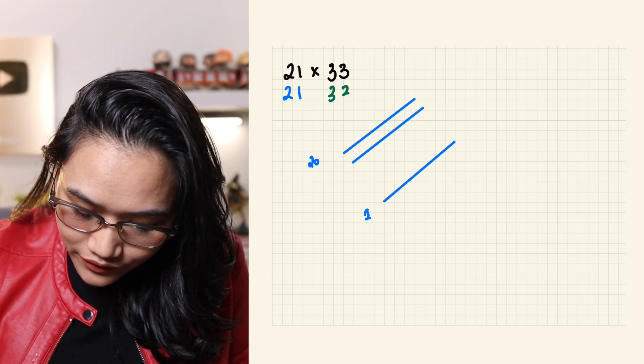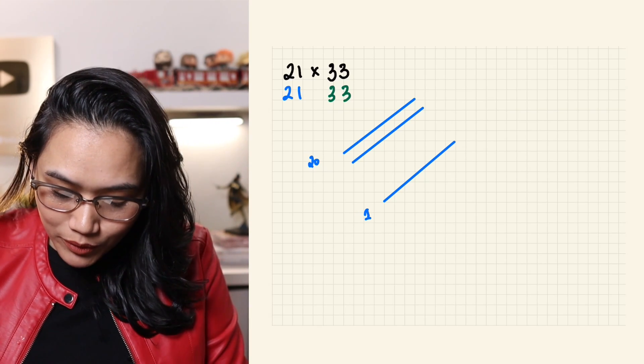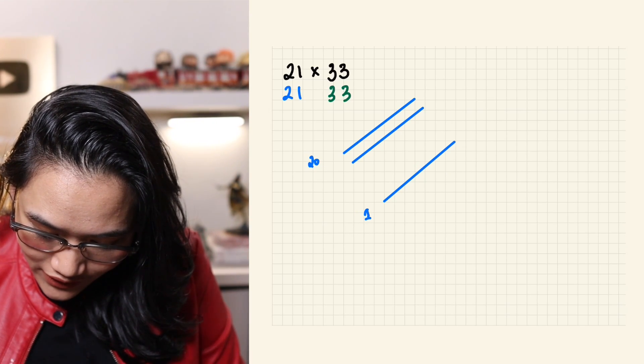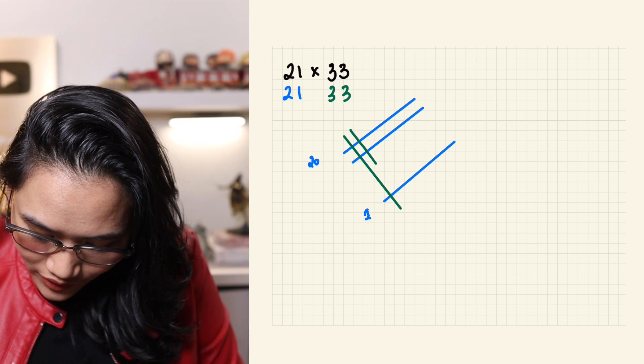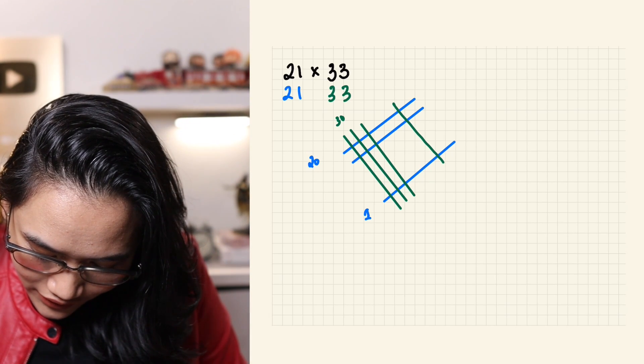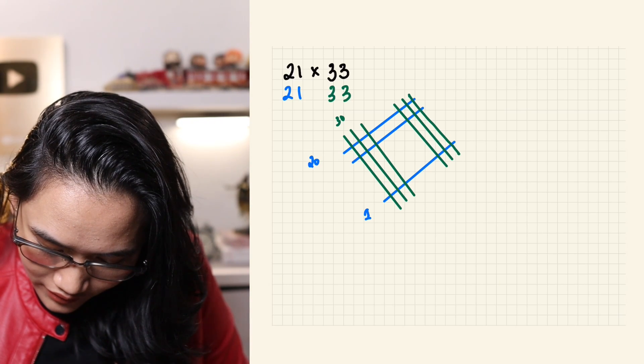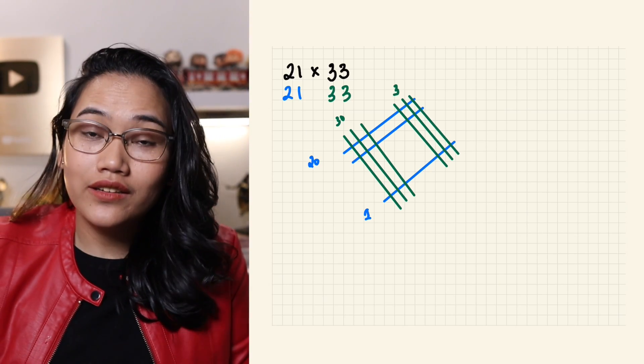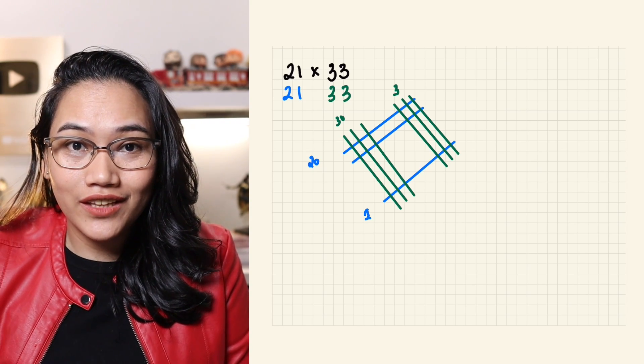Next, we have 33 to represent with lines. It's important that we start right here at the top. For the 3, at this corner. So, 1, 2, and 3. Then, on this right side, we also have 3 lines to represent the 3 in 33. Now, the next part is to count the intersections.